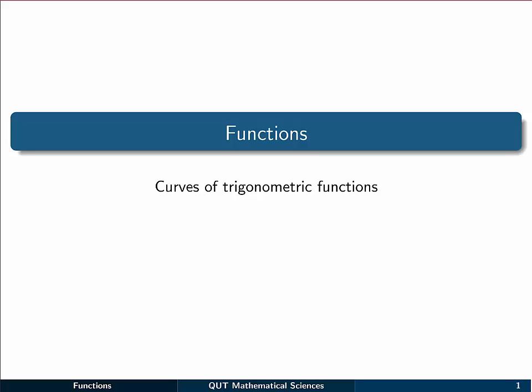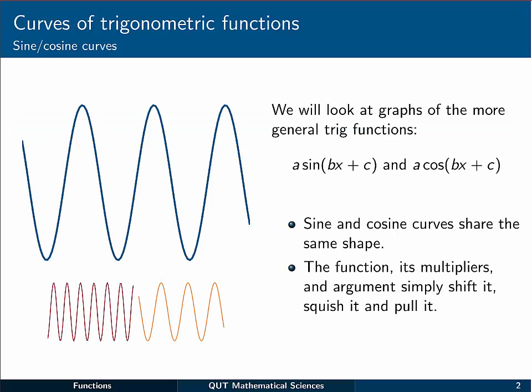We'll now look at graphing trigonometric functions and seeing how to change them for different types of applications. Generally speaking, the graphs of sine and cosine functions look pretty much the same. They all have this sort of sinusoidal shape to them. But depending on certain various parameters, this sort of shape can be stretched or squished, or pulled or shrunk in the vertical direction as well. And it can also be moved along the axis in a shifting kind of way, as we've spoken about before in composite functions.